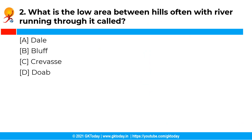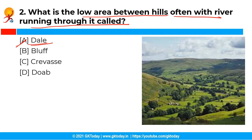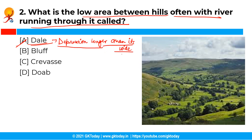The next question is: What is the low area between hills, often with a river running through it called? The correct answer is option A, that is Dale. Dale is a low area between hills, often with a river running through it. Dale is a depression which is longer than it is wide.